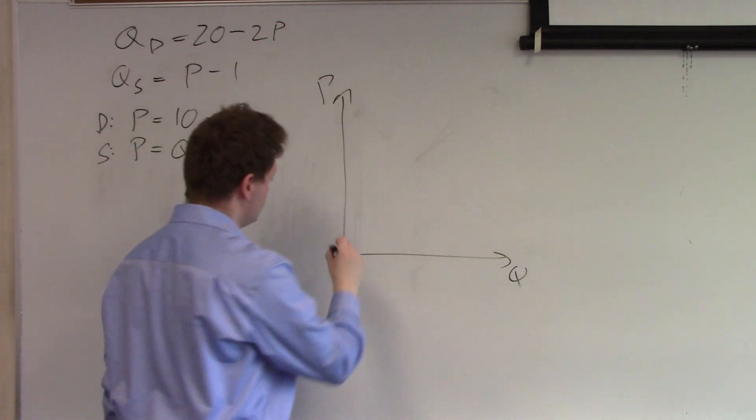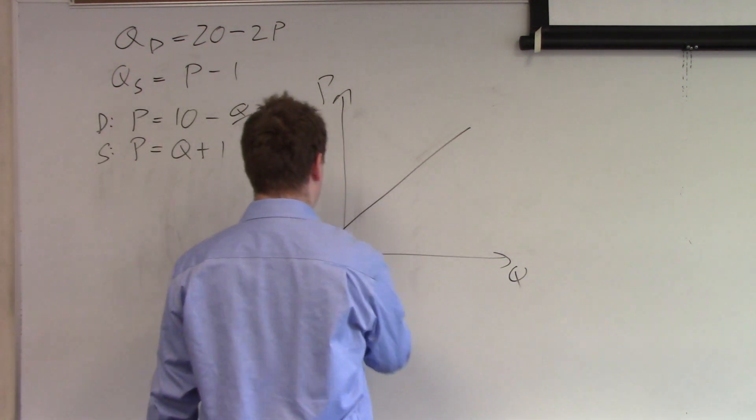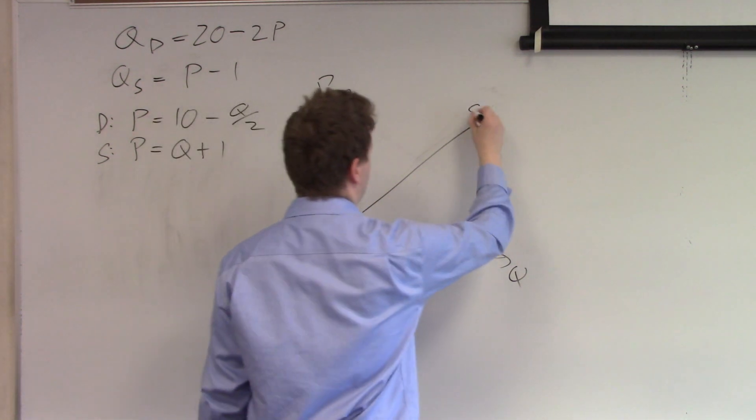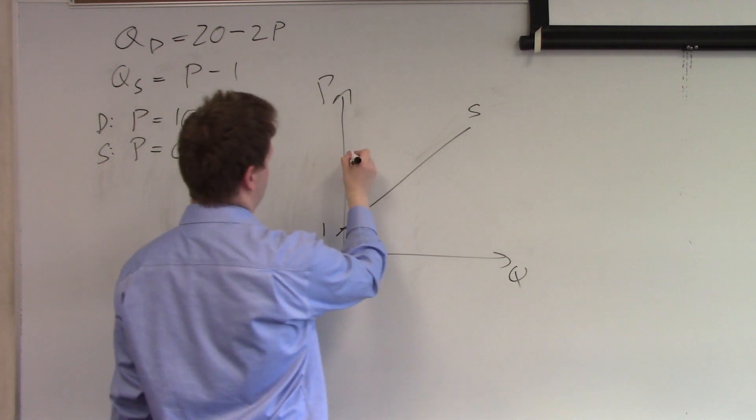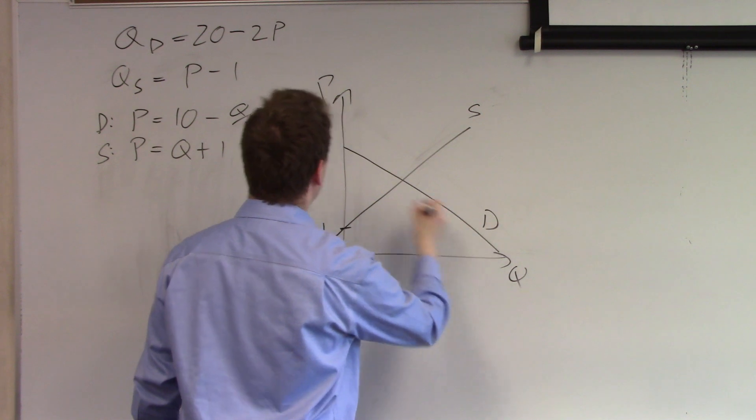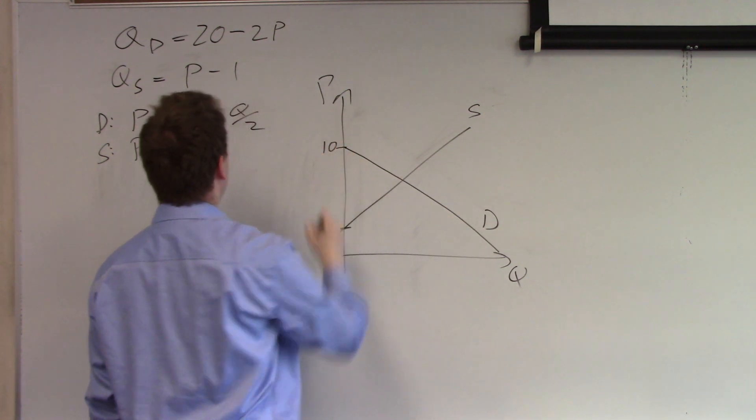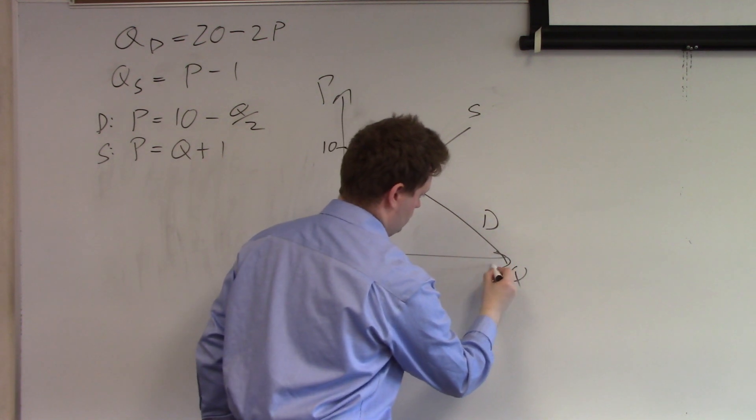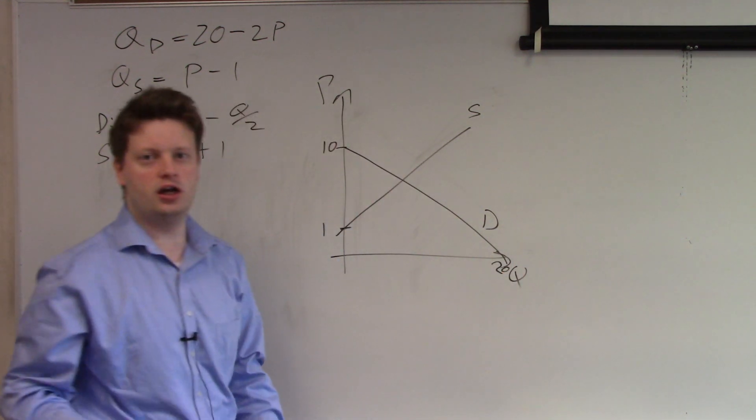So we have an upward sloping supply that starts at 1 here. So that's our supply. And we have a downward sloping demand which starts at 10 here and based on the 20 here cuts the axis here at 20.